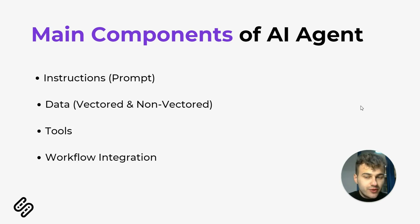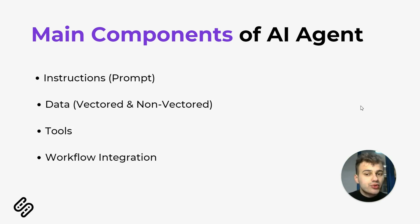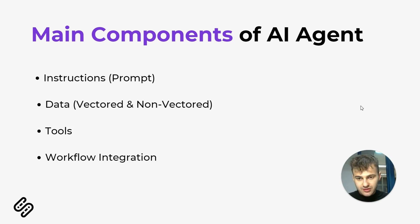To build an effective AI agent, you need to focus on four main components. The first is instructions, or in other words, prompts — this defines what the agent does, how it does it, and under what rules. Next is data — vectored or non-vectored — which the agent uses to make decisions and provide results. The third component is tools, including APIs, automations, or sub-agents — something the agent uses to take action and complete tasks. And the last one is workflow integration: your AI agent needs to be integrated somewhere.